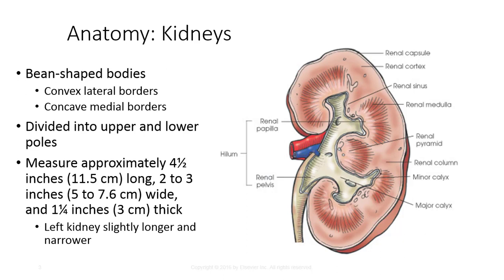The kidneys are bean-shaped bodies with convex lateral borders, concave medial borders, and can be divided into upper and lower poles. They each measure approximately 4.5 inches long, 2-3 inches wide, and 1.75 inches thick. The left kidney is slightly longer and narrower than the right, and typically resides more superior than the right.